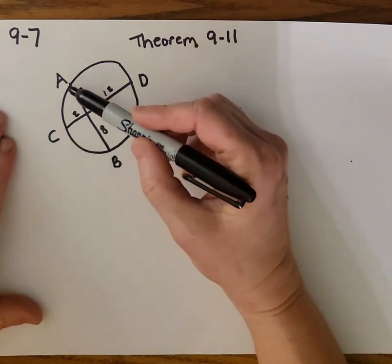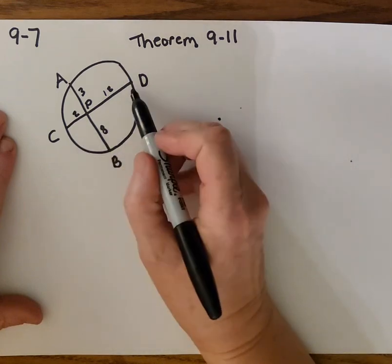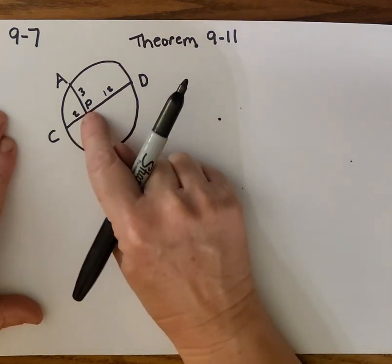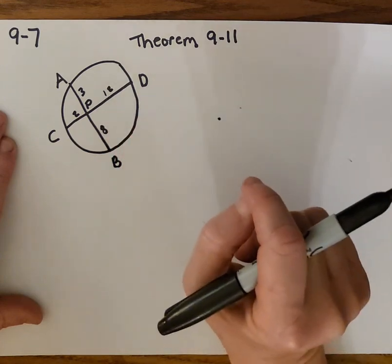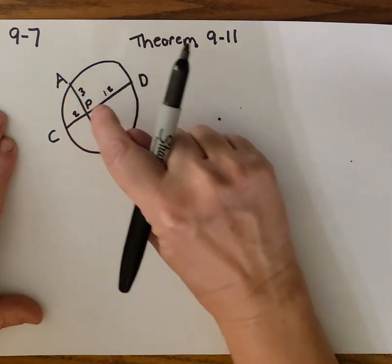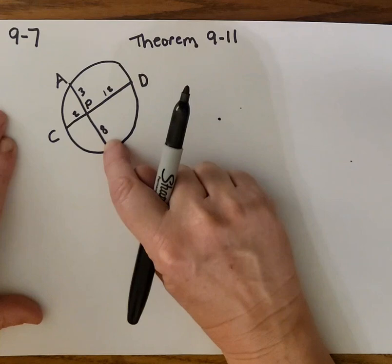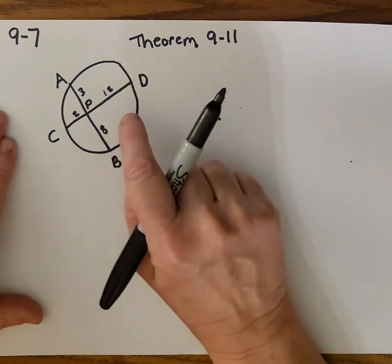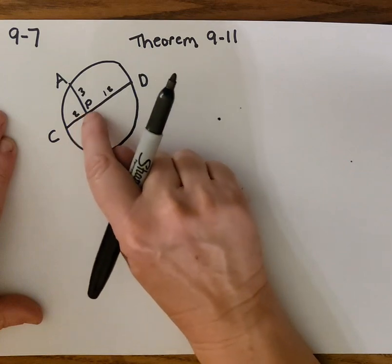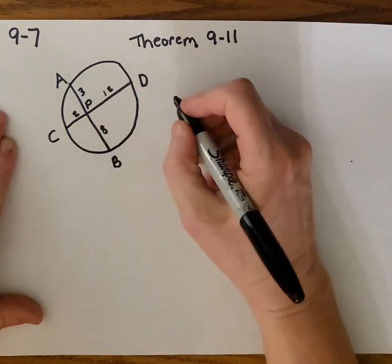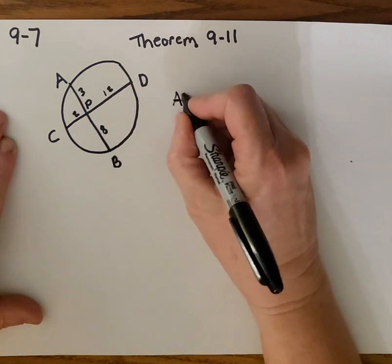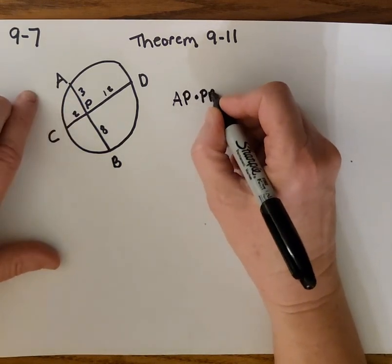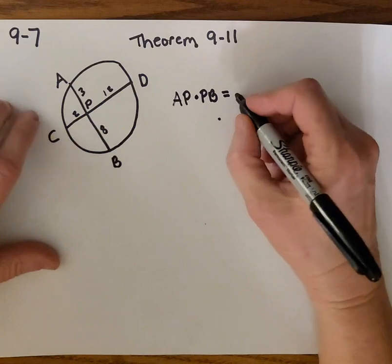Theorem 9-11 says: when two chords — chord AB and chord CD — intersect inside the circle, then the product of the segments of one chord, segment AP and segment PB multiplied together, equals the product of the segments of the other chord, CP and PD. So AP times PB equals CP times PD.